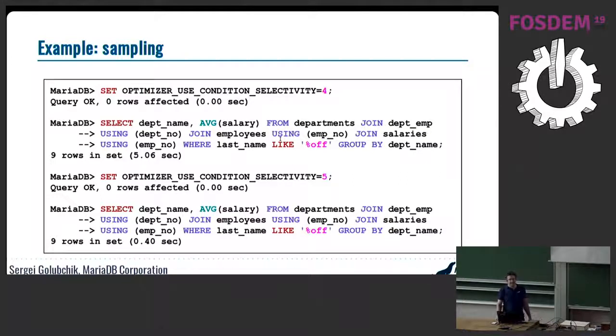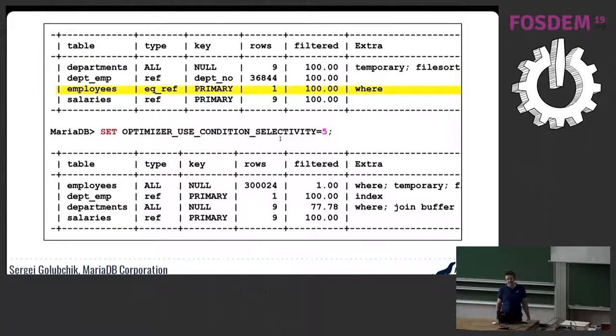How does sampling work? Because there's no other way for optimizer to get any reasonable information about the data. It reads few rows from the table and applies this like condition. Then it extrapolates the result to the rest of the table. Indeed, without sampling, you can see that filtered column is 100 percent because there's no histograms, no indexes, nothing that could help optimizer to know anything about the data. With sampling, optimizer can realize that indeed very few rows match the where clause. It optimizes joining tables in different order. This is 12 times speed up.